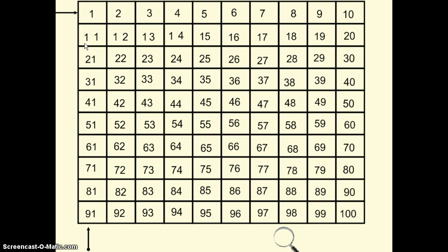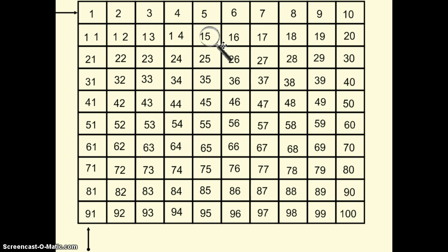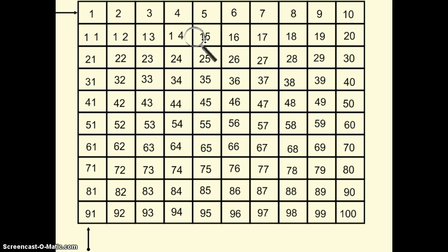There are also patterns we can see in the rows. The rows are kind of the opposite of the columns. In the rows, the ones place is always increasing by one — one, two, three, four, five, six, seven, eight, nine. But my tens place always stays the same — one, one, one, one, and so on through the row.